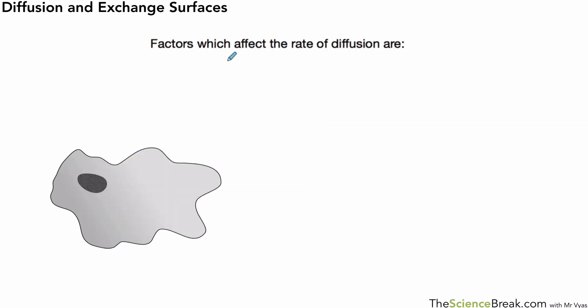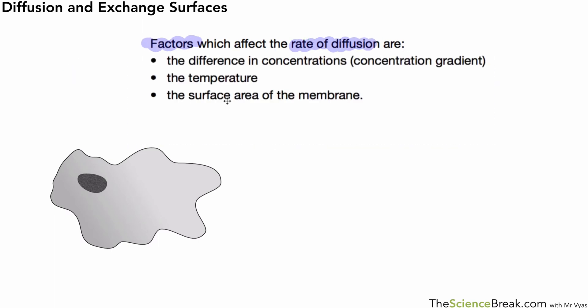We also need to talk about factors that affect the rate of diffusion—the speed of diffusion and how quickly it works. There are three important ones you need to know about. The first one is linked to the difference in concentrations of the substance. Here I've got a cell living in water that needs oxygen to carry out respiration.